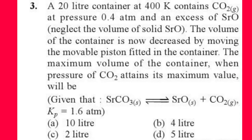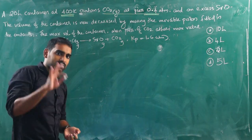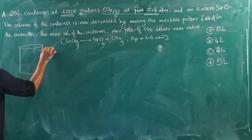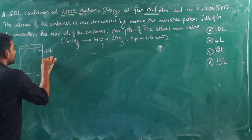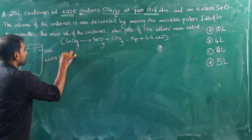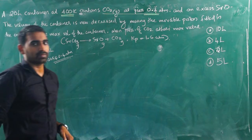The volume of the container is now decreased by moving the movable piston fitted in the container. We need to find the maximum volume of the container when the pressure of CO₂ attains its maximum value. The reaction is: strontium carbonate gives SrO plus CO₂, and Kp is equal to 1.6 ATM. The container is 20 liters total, at 400 Kelvin and 0.4 ATM pressure, with excess SrO.